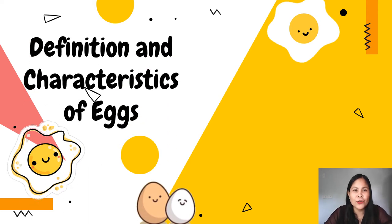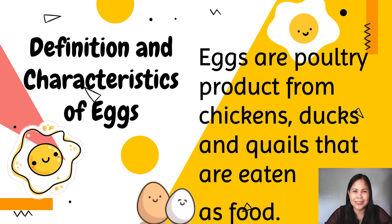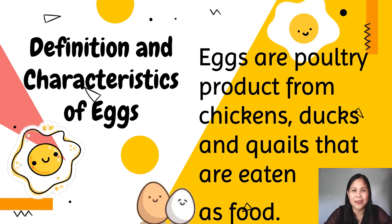For the definition and characteristics of eggs: eggs are poultry products from chickens, ducks, and quails that are eaten as food. Unclassified egg refers to chicken eggs since they are the most widely consumed in the country and in other countries. Duck egg is the second most popular, sold in the form of salted eggs or itlog na maalat, balut, or penoy. Quail eggs are as equally popular as duck eggs.